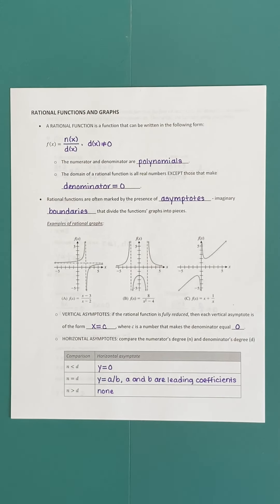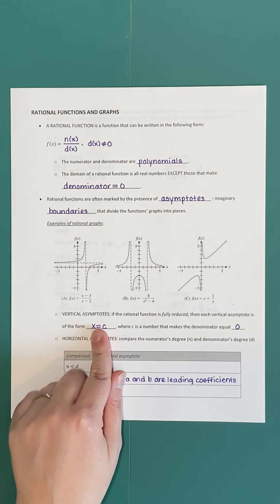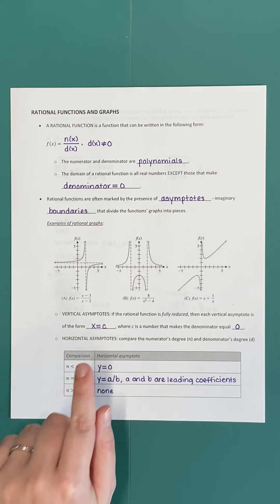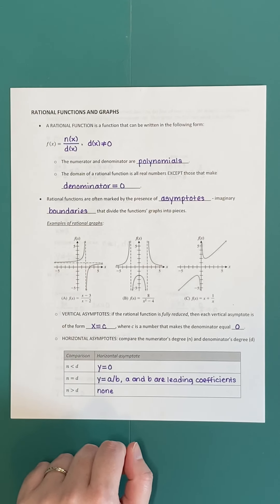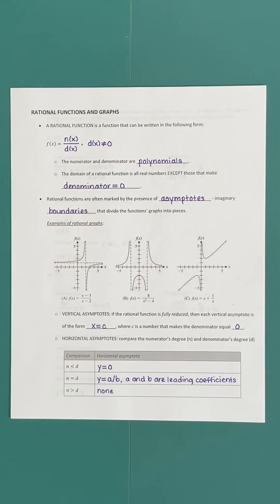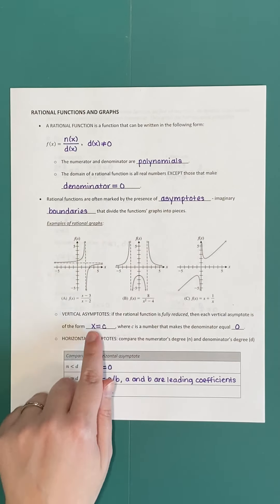Assuming everything is fully simplified, our vertical asymptotes are all going to be of the form x equals c — x equals a number — which represents a vertical line. The equation x equals a number is the vertical line that passes through that particular number on the x-axis. So because our vertical asymptotes are lines, this form is how we write the equation for each of those vertical boundaries. The number is ultimately what we're looking for.